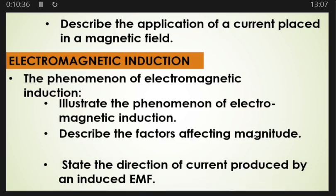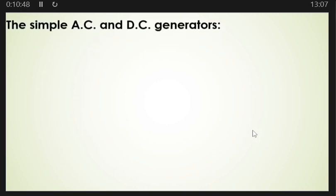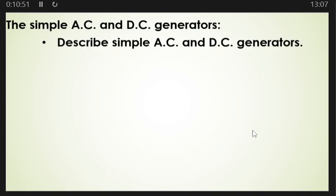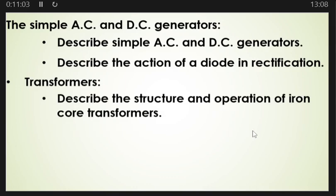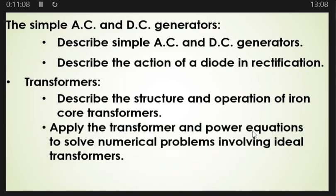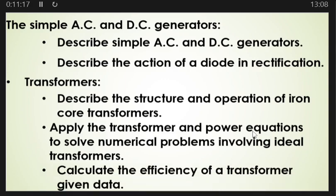You must also be able to state the direction of current produced by an induced EMF. From here you need to look at the simple AC and DC generator — describe both generators and describe the action of a diode in rectification. You also need to look at transformers: describe the structure and operation of iron core transformers, apply the transformer and power equations to solve numerical problems involving ideal transformers, and calculate the efficiency of a transformer given data.